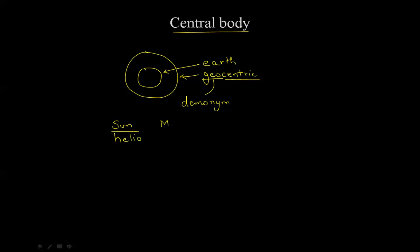I'll give you more examples. If the central body were the moon, it would be called a lunar orbit, to keep things simple. Rarely, if ever, you will hear the term selenocentric orbits.